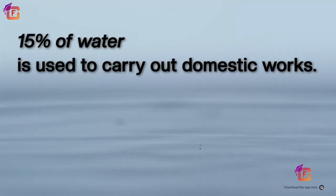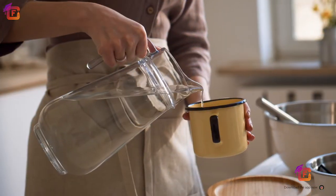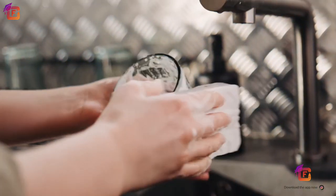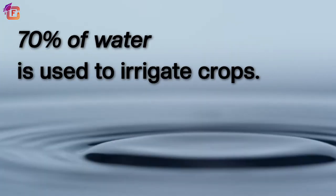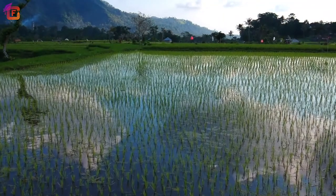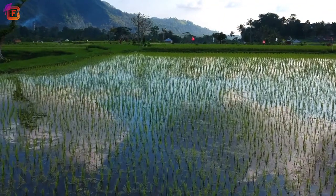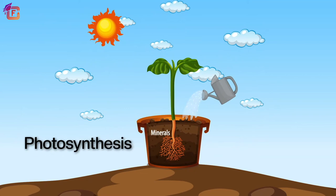About 15% of water is used to carry out domestic works, including drinking, cooking, bathing, washing clothes and utensils, cleaning, and others. About 70% of water is used to irrigate crops. Plants need water to grow and consume water during the process of photosynthesis.